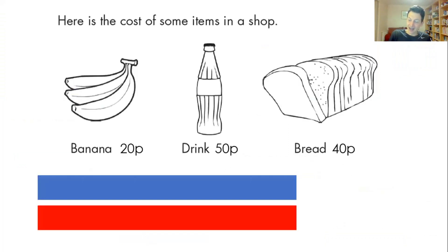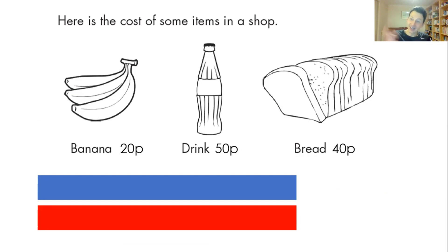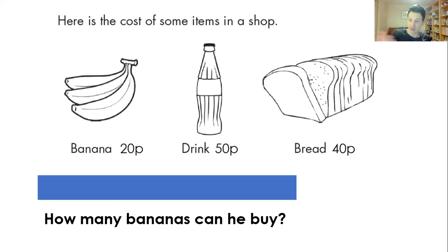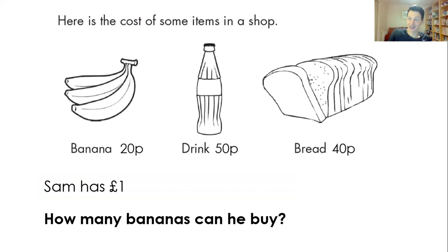Here's a technique I've used with younger children, and a common structure that will be used in this resource as well: covering up the information required to answer a question in a blue box, covering up the question in a red box, and often first asking children what the question could be and listing different possible questions. When children have generated different possible questions, I could then remove the red box and say, 'Well actually the question is: how many bananas can he buy?' Then children have to think about what information must be needed to answer that question, and we think about the deep structure before calculating the answer.